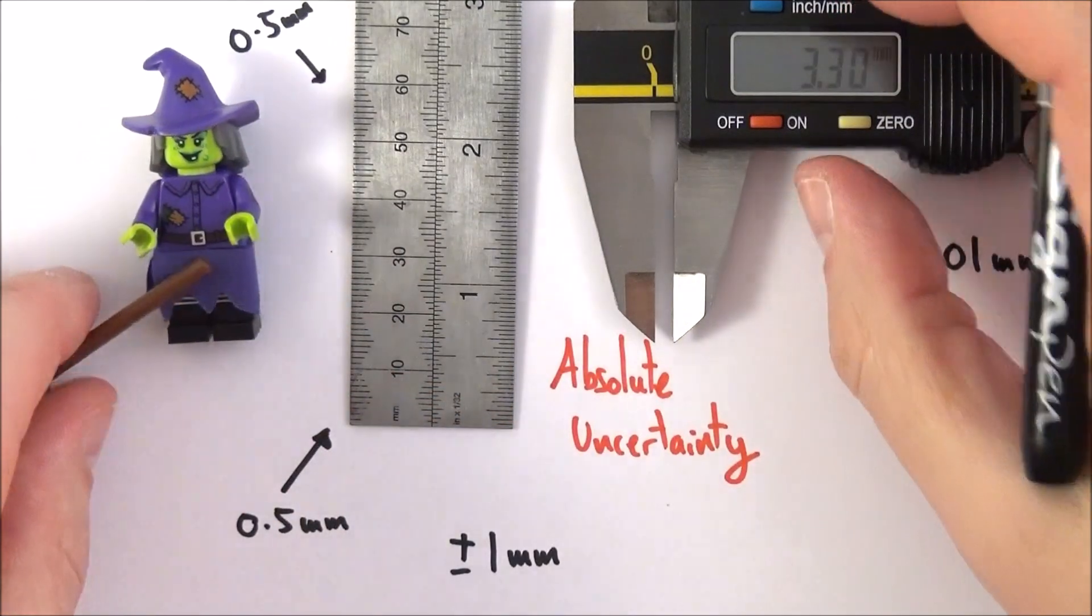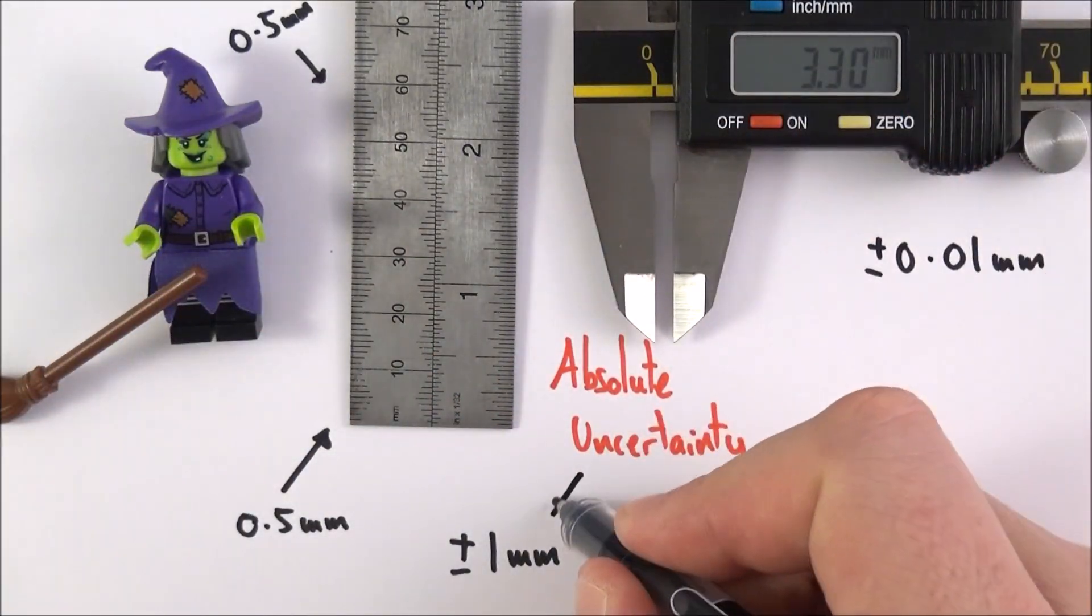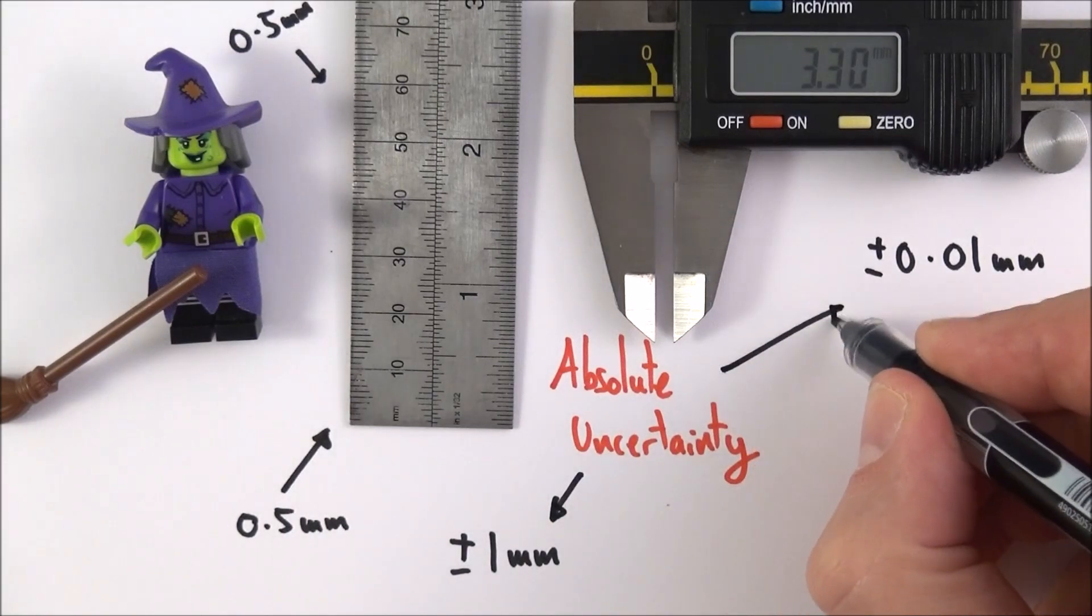We can't use this for everything. If we have long distances this doesn't work, but what we have are different amounts of absolute uncertainty.